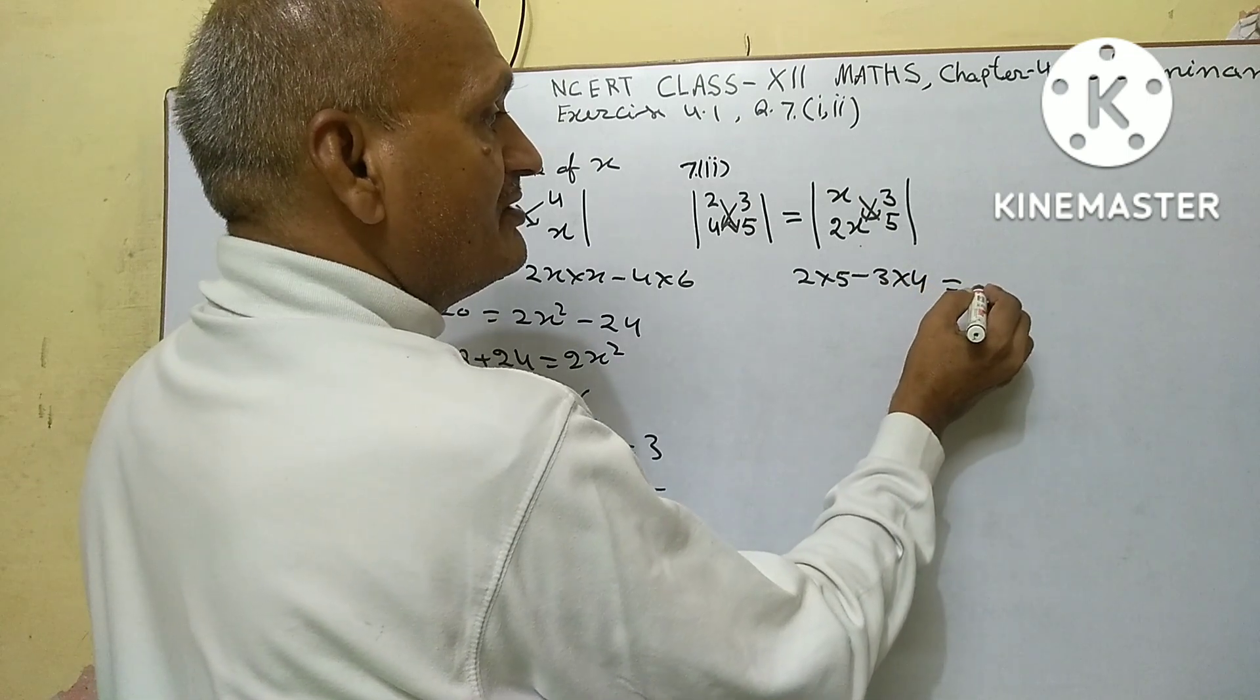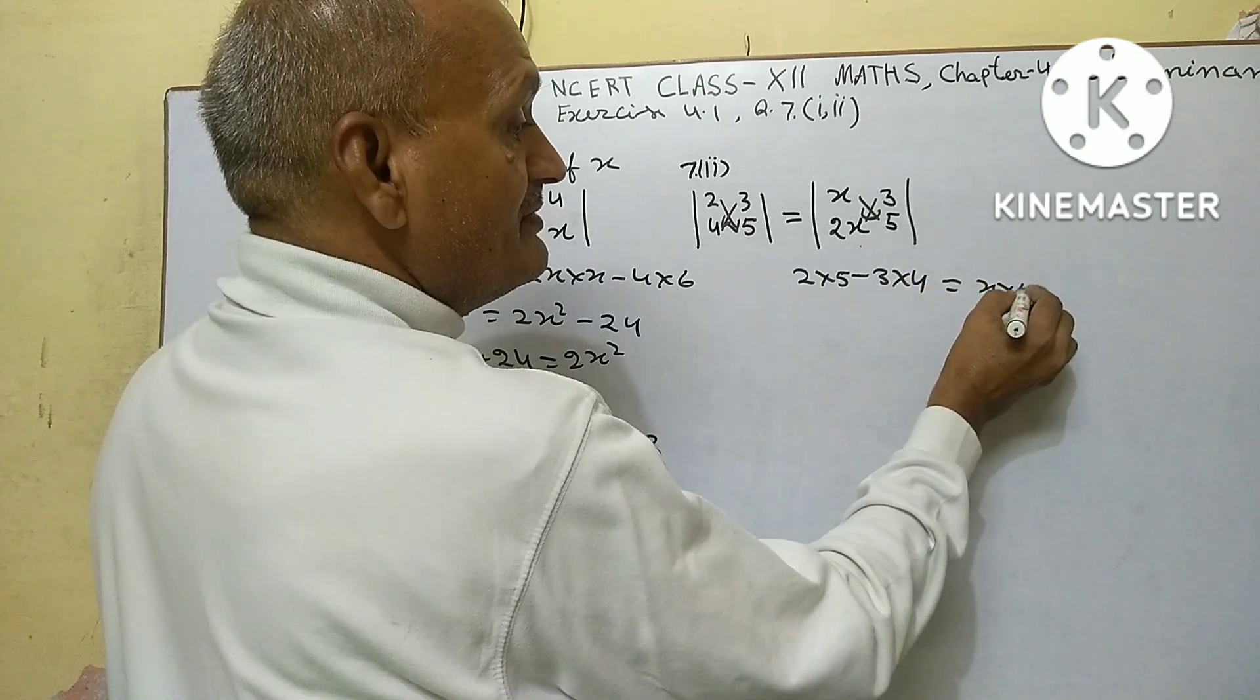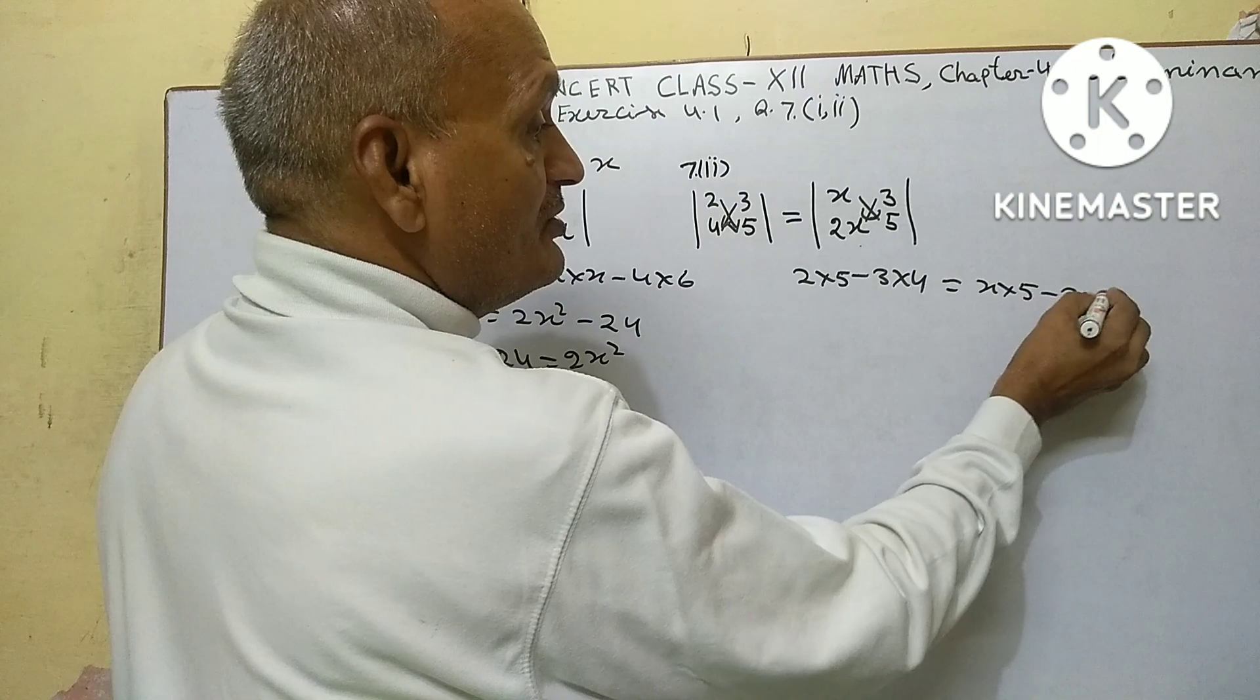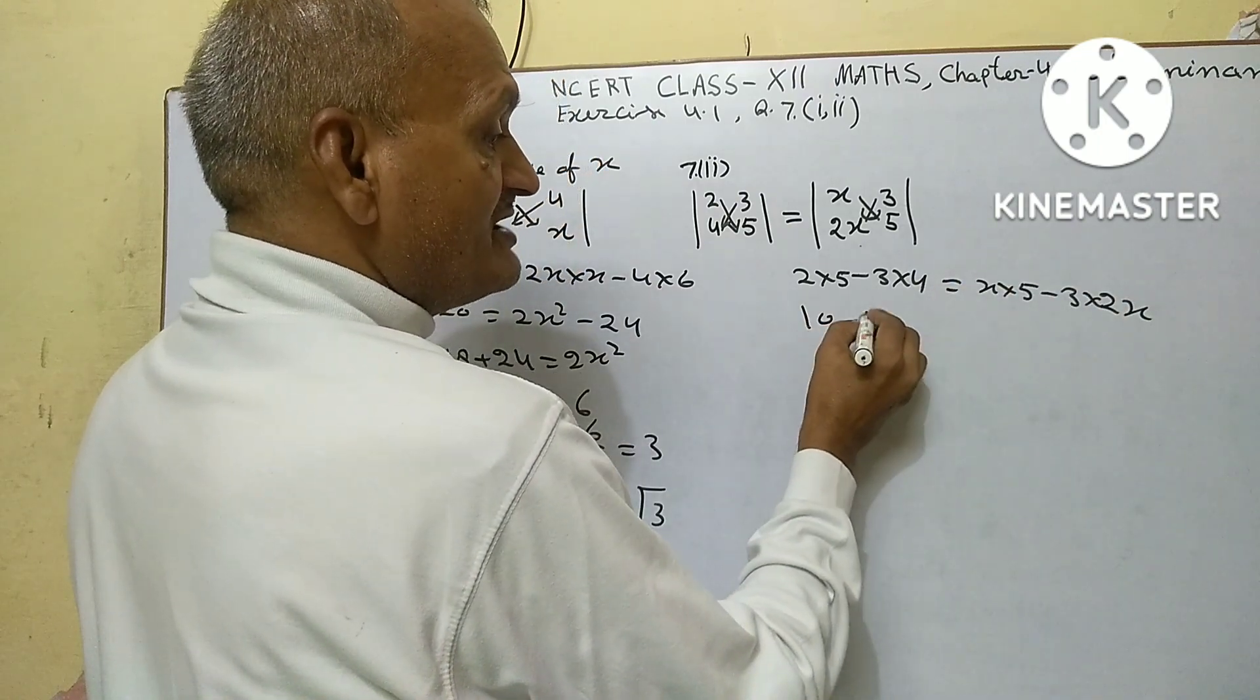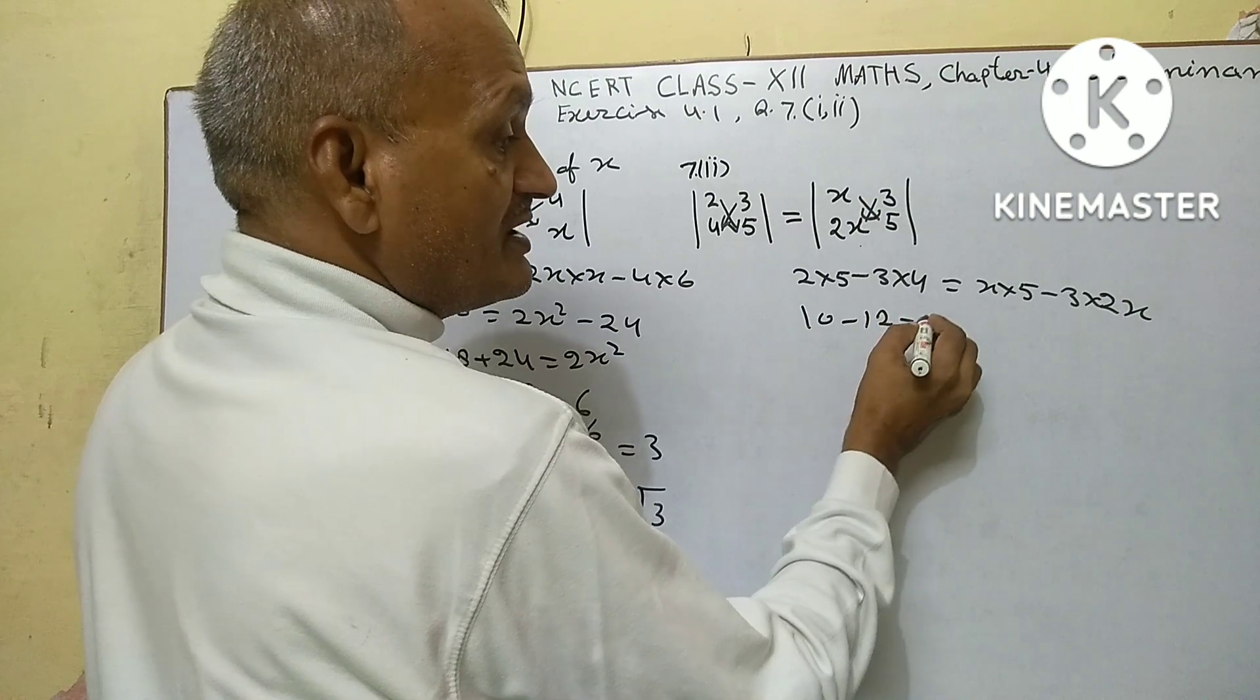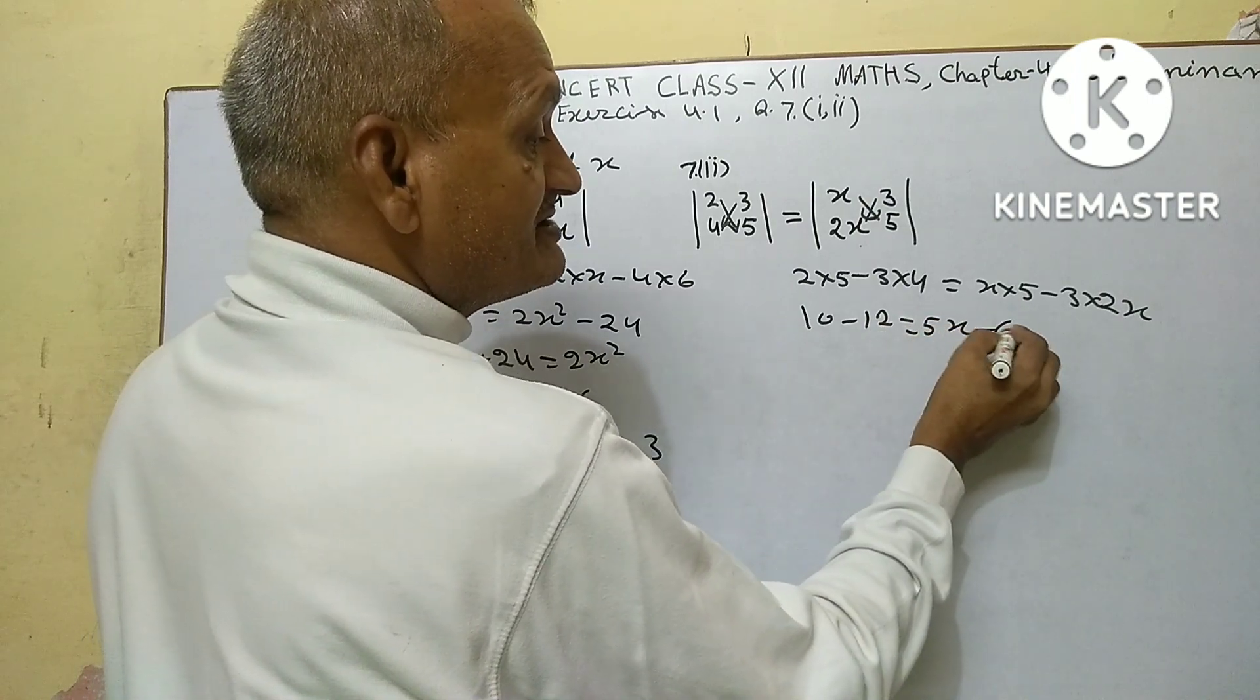Equal x into 5 minus 3 into 2x. This is 10 minus 12 equals 5x minus 6x.